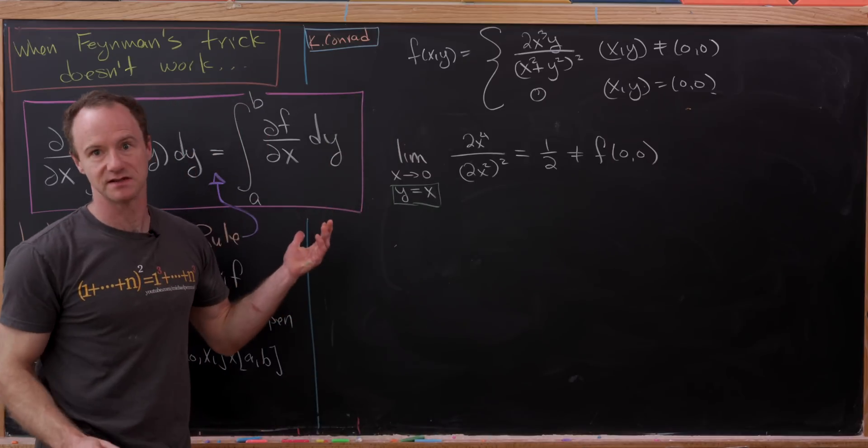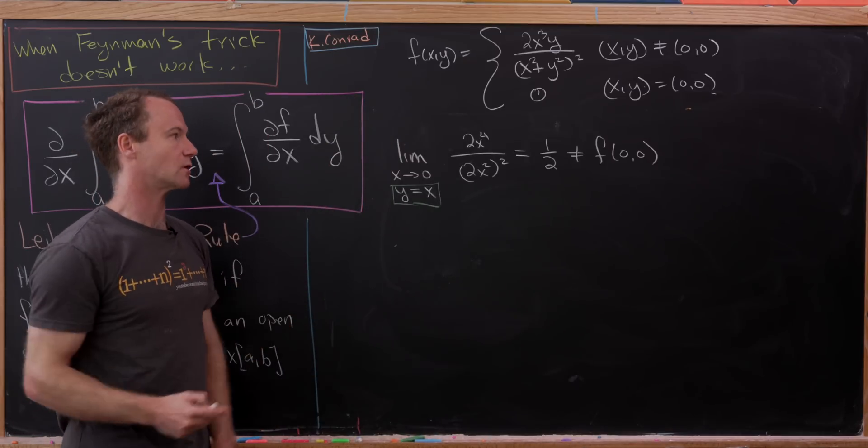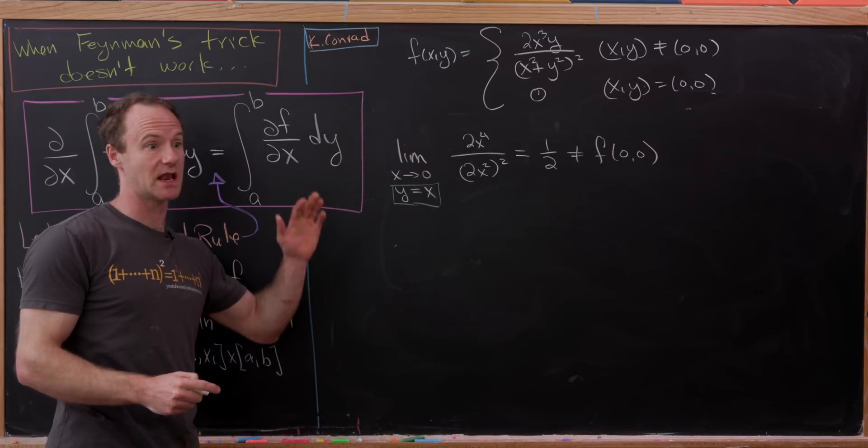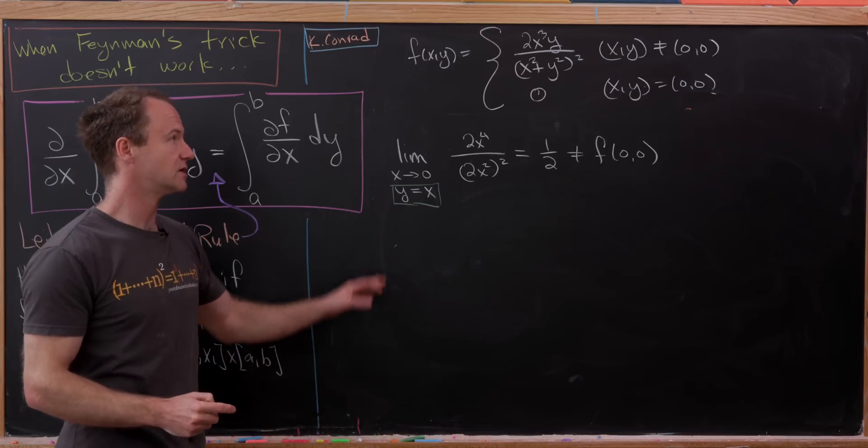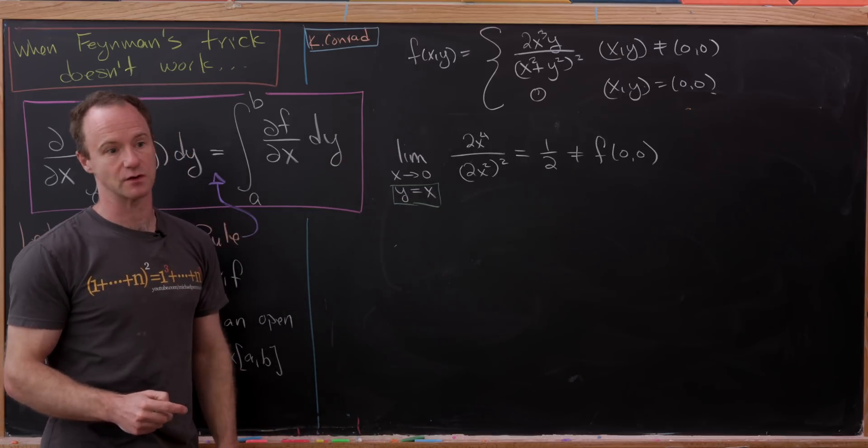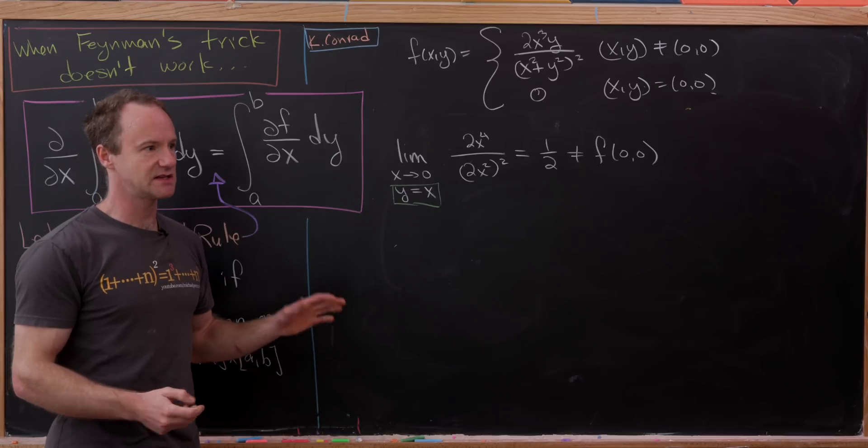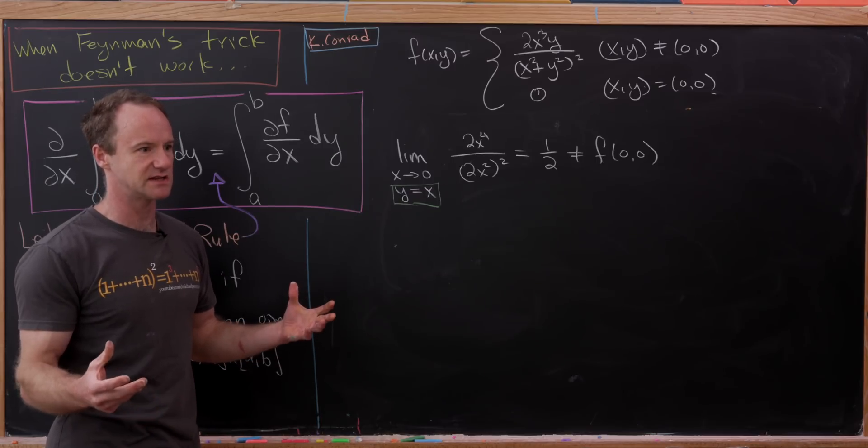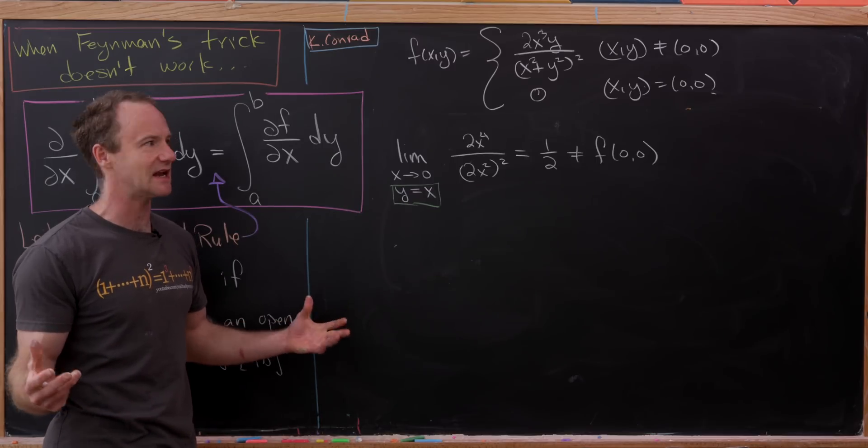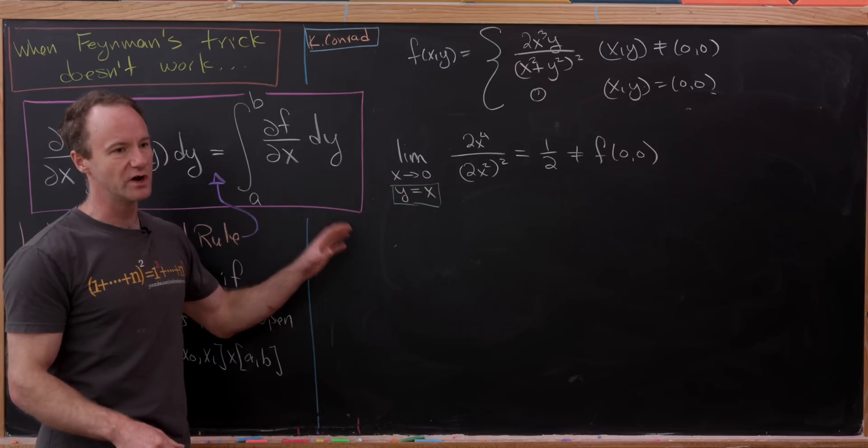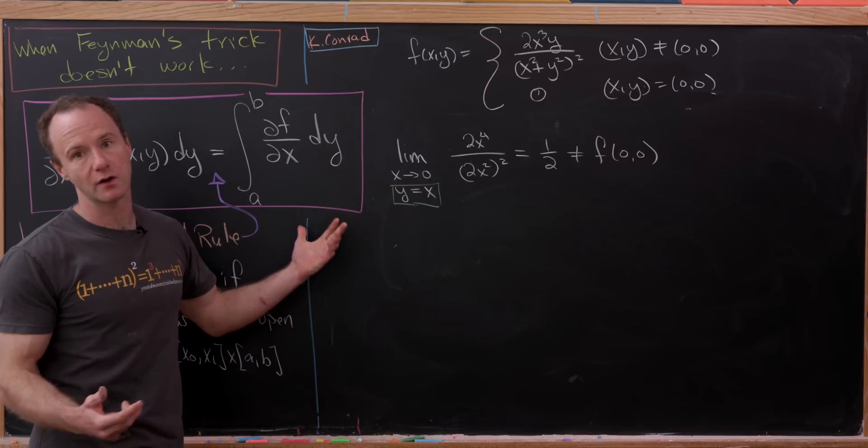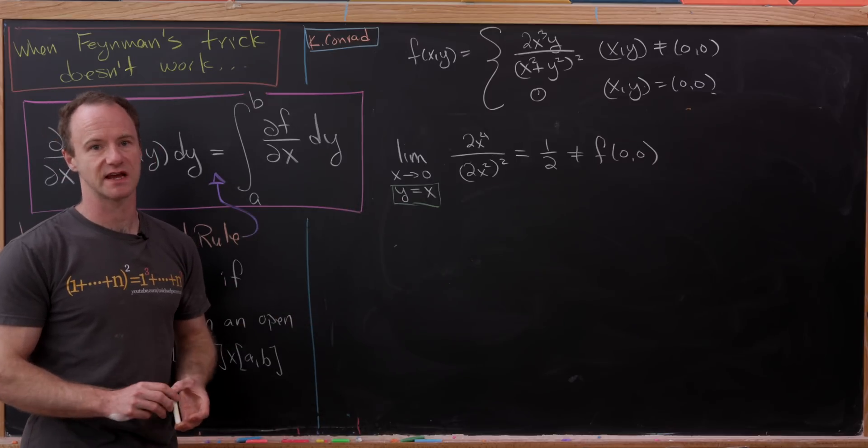Even though this limit is happening towards the origin, the limit is not equal to the functional value. So this is not continuous at the origin. But if it's not continuous at the origin, it can't be continuous in an open set containing the origin, which is what we would have needed to have equality where equality indeed failed for this case.